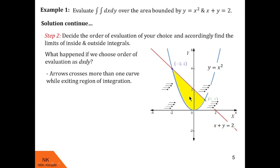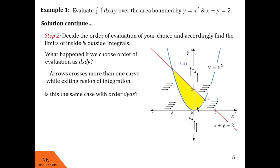Before splitting, we check whether the same issue arises for the dy dx order. For that we throw arrows parallel to the y-axis from bottom to top. These arrows enter the region by crossing the parabolic curve and leave by crossing only the straight line — one curve each while entering and exiting. So in the order dy dx, we do not need to split the region of integration. We stick to this order of evaluation, that is dy dx.